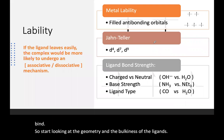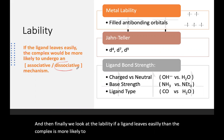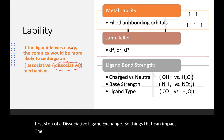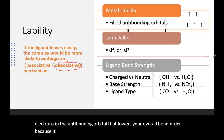Finally, we look at lability. If a ligand leaves easily, the complex is more likely to undergo a dissociative step, since that's the first step of dissociative ligand exchange. One thing that impacts lability is having electrons in the anti-bonding orbital, which lowers the overall bond order by weakening the metal-ligand sigma bonds.